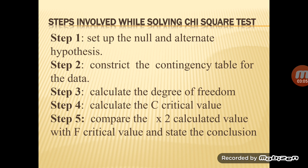There are five steps involved in solving the chi-square test. First, set up the null or alternative hypothesis. Second, construct the contingency table for the data. Third, calculate the degree of freedom. Fourth, calculate the critical value. Fifth, compare the calculated X² value with the critical value.